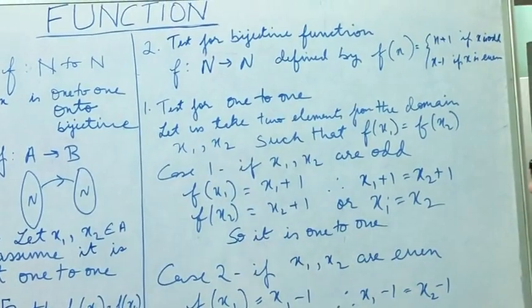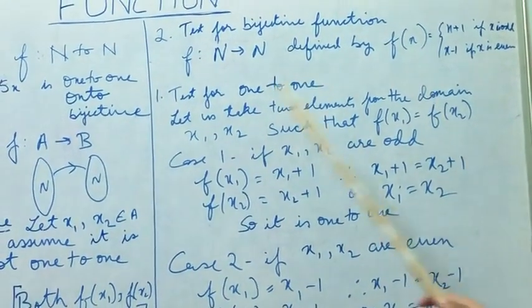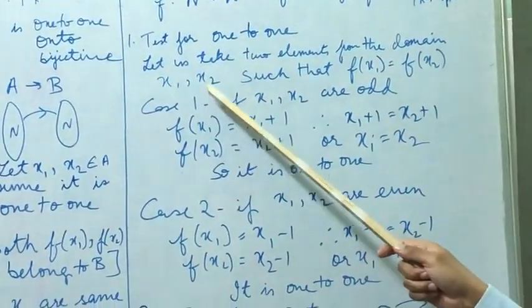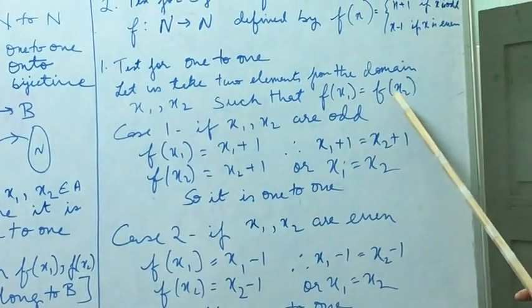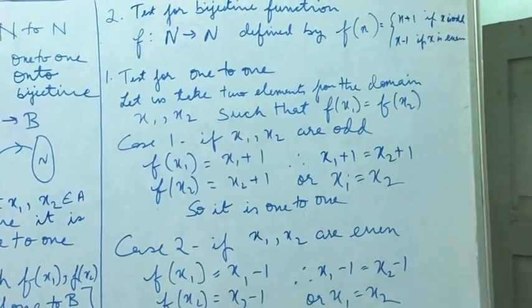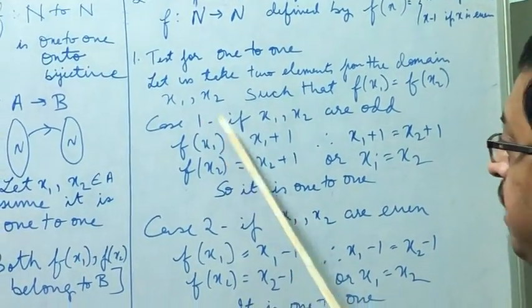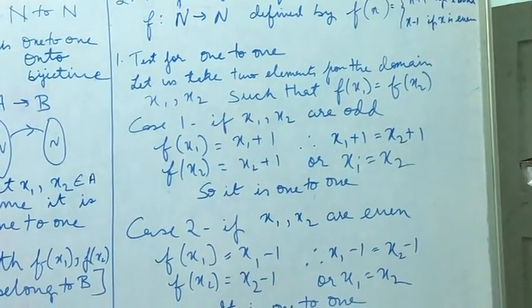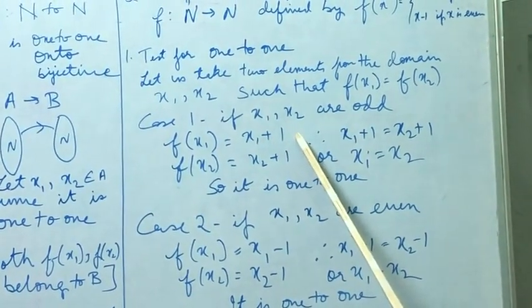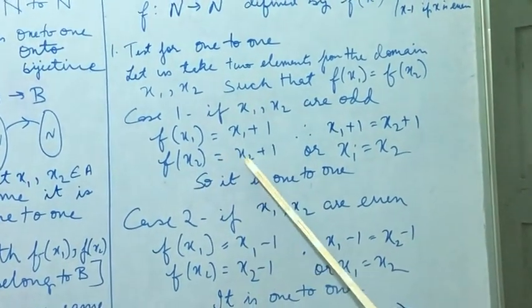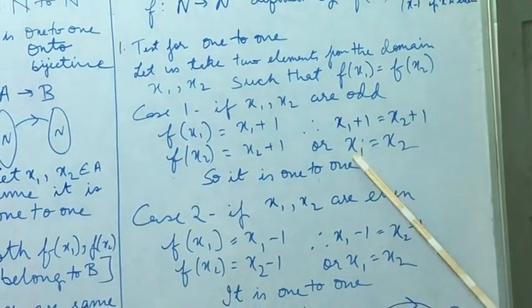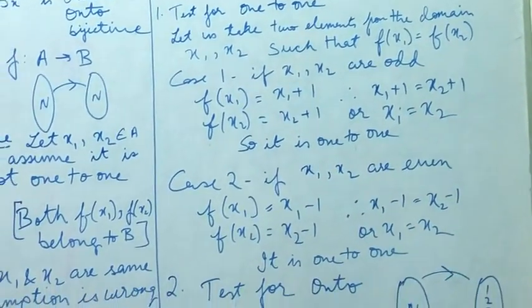To test for one-to-one, we will take two elements from the domain, the set A. Such that x1 and x2 are such that f(x1) is equal to f(x2). In the first case, if x1 and x2 are odd, then f(x1) equals x1 plus 1 and f(x2) equals x2 plus 1. And if they are equal, we will see by mathematically solving that x1 equals x2. So it is one-to-one.